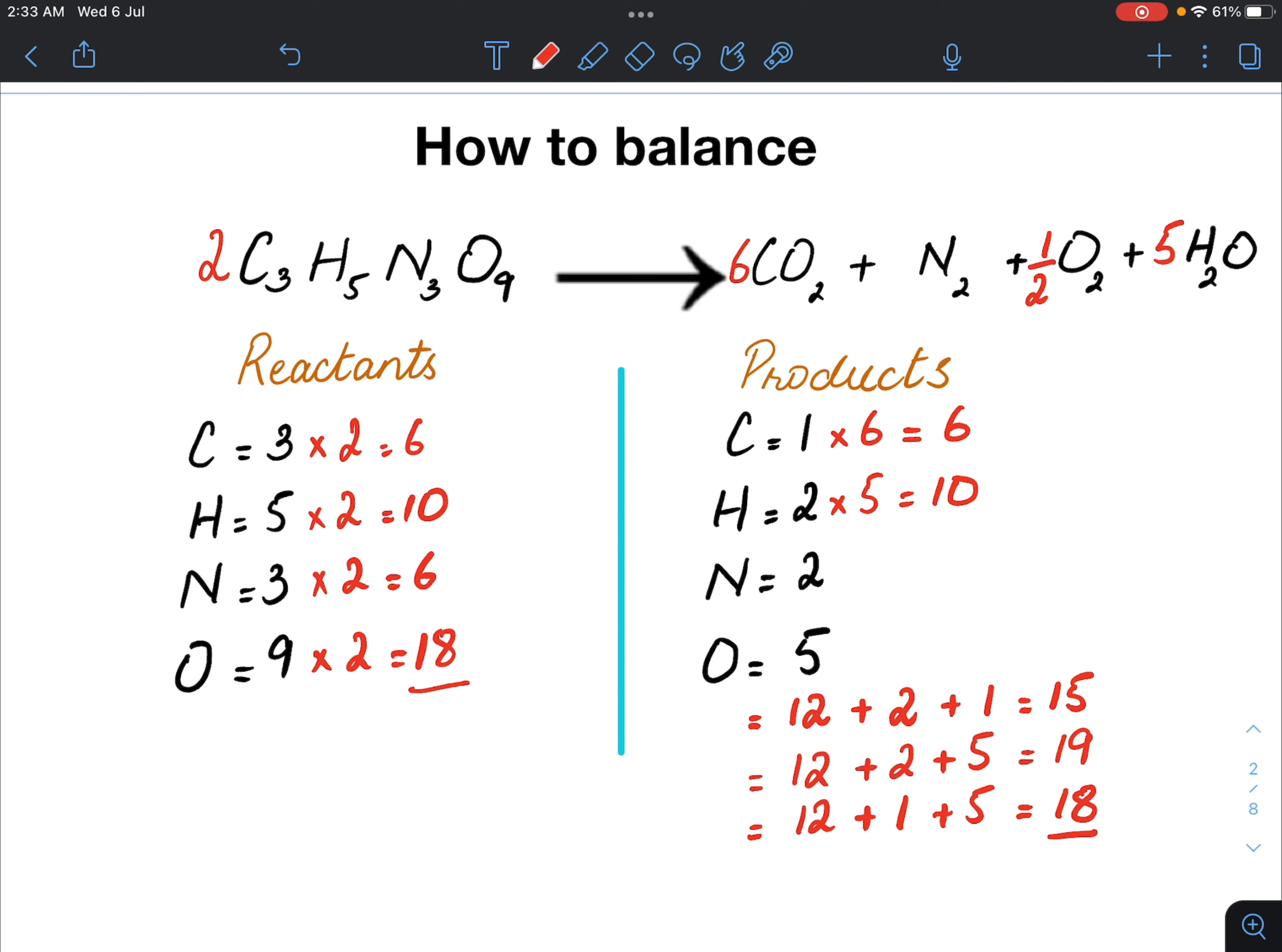One thing that is still unbalanced is this nitrogen. So, I have to make it equal to 6. I put 3 here, which means 2 multiplied by 3 equals 6. Comparing both sides, 6 here, 6 here for carbon, 10 here, 10 here for hydrogen, 6 here and 6 here for nitrogen and 18 and 18 here for oxygen. This equation is balanced.